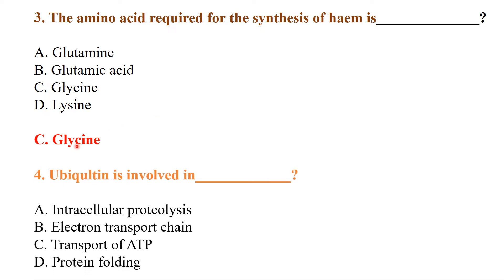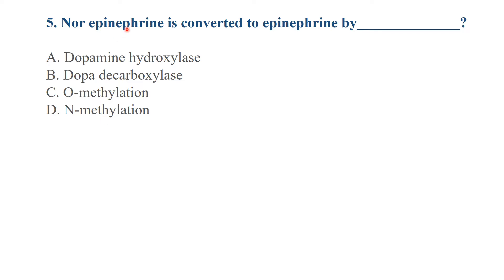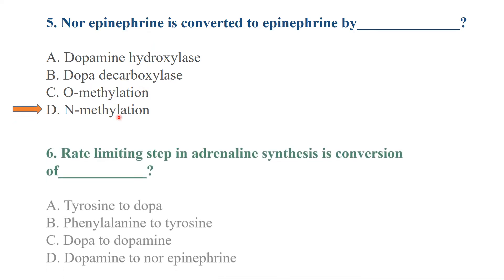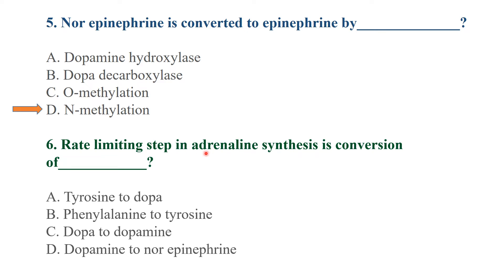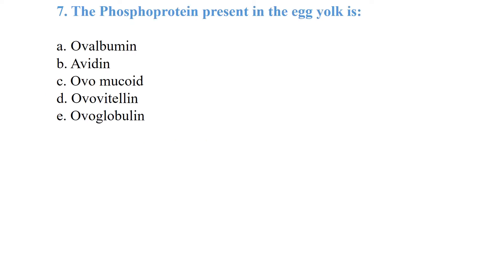Ubiquitin is involved in intracellular proteolysis, meaning protein degradation. Epinephrine is converted to epinephrine by N-methylation. The rate-limiting step in adrenaline synthesis is conversion of tyrosine to DOPA. The phosphoprotein present in egg yolk is ovavitellin.